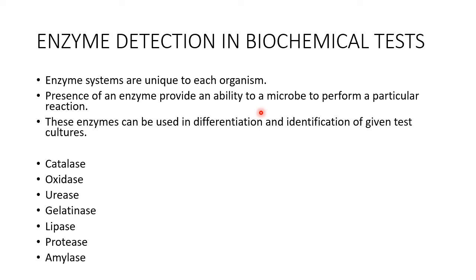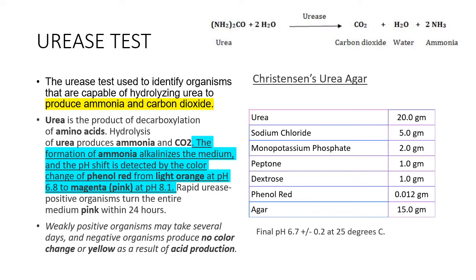There are different enzyme detection tests we perform, of which catalase, oxidase, and amylase have been covered in a previous video. Now we are going to focus on urease and gelatinase, and later on lipase. First is the urease test, which is used to identify organisms capable of hydrolyzing urea to produce ammonia and carbon dioxide.